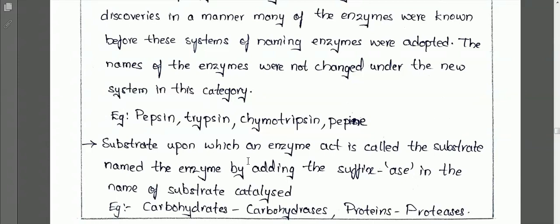Now let's see what is the definition of enzymes. Enzymes are proteins which accelerate the rate of a variety of chemical reactions which occur in biological systems under thermodynamically unfavorable conditions.